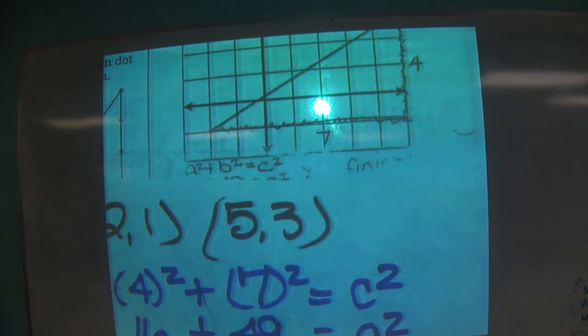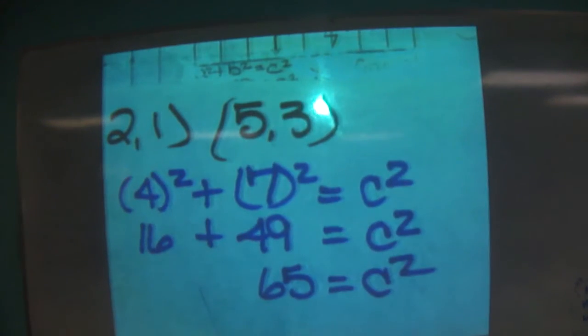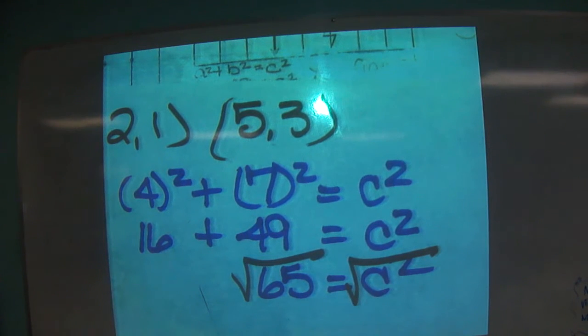16 plus 49, what is it? 65 equals C squared. We're going to take the square root of each, and we know it's really close to what integer? Just a tiny bit more than what? What's the square root of 65 really, really close to? 8.